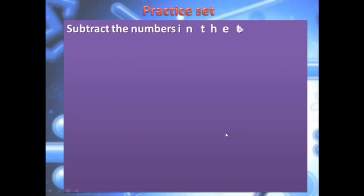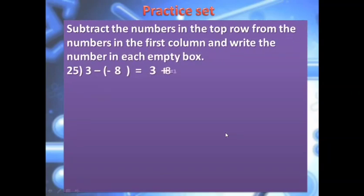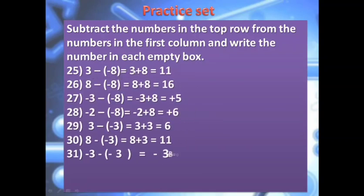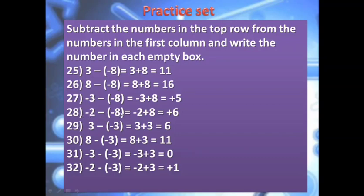Last set of questions from the practice set: 3 subtracted from negative 8 — opposite of negative 8 is positive 8. So 3 plus 8 is 11. Bigger number 8 has positive sign, so the answer is plus 11. Minus 2 subtracted from minus 8 — opposite of minus 8 is positive 8. So minus 2 plus 8 — opposite signs, subtract: 8 minus 2 is 6. Bigger number 8 is positive, so plus 6. Minus 3 subtracted from minus 3 — opposite of minus 3 is plus 3. Opposite signs, subtract: 3 minus 3 is 0. Since 0 is neither positive nor negative, no sign needed. Minus 2 subtracted from minus 3 — opposite of minus 3 is plus 3. Minus 2 written as it is. 3 minus 2 is 1. Bigger number 3 has positive sign, so the answer is plus 1.